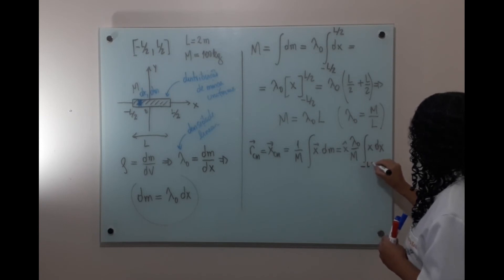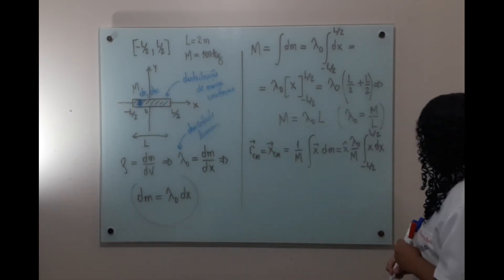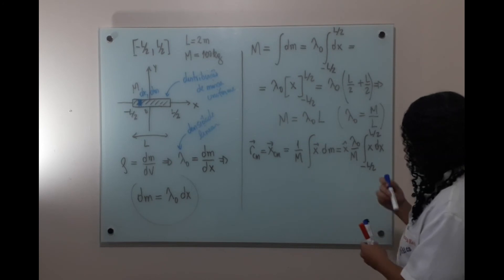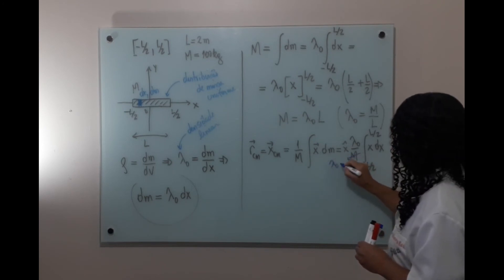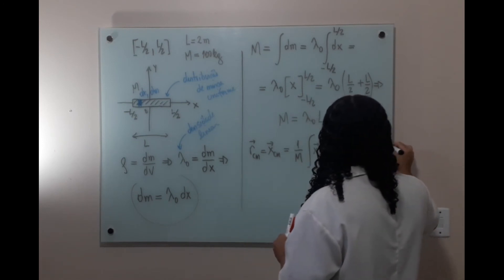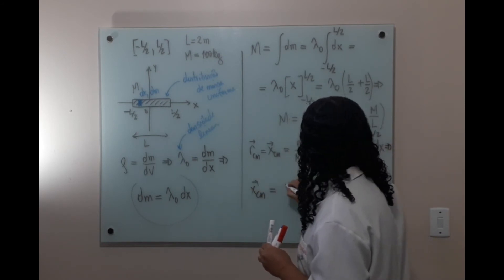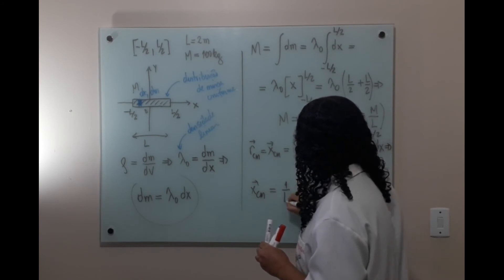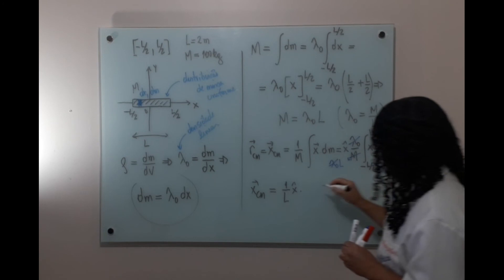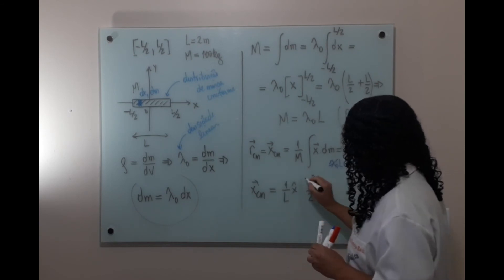A integral vai de menos L/2 até L/2. A massa é λ₀L, então λ₀ se simplifica e fica 1 sobre L. A posição do centro de massa vai ser 1/L vezes a integral de x dx, que é x² sobre 2 — porque quando a gente deriva x² sobre 2, o resultado dá x — avaliada de menos L/2 até L/2.